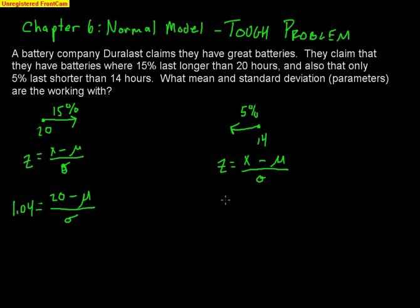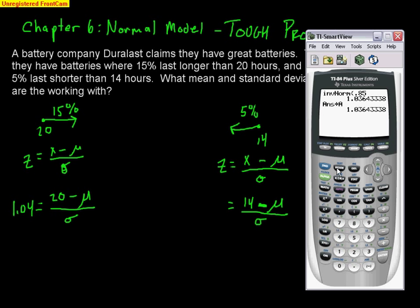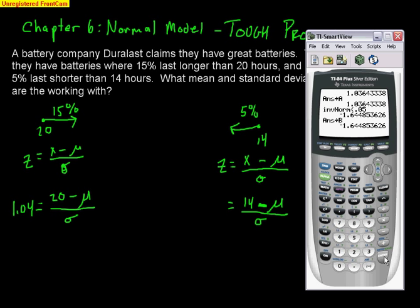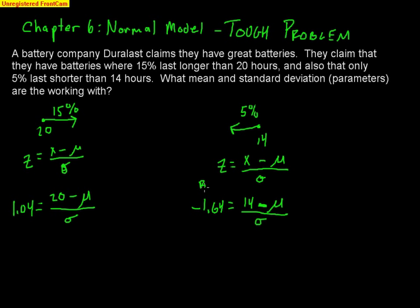Now I'll do the same thing for the second equation. The value of interest is 14 hours, minus the average, divided by the standard deviation. I need a z-score that has 5% below it. I don't need to change anything here since InvNorm already takes values below, so I use InvNorm(0.05) and get a z-score of negative 1.64. I'll store that as alpha B.